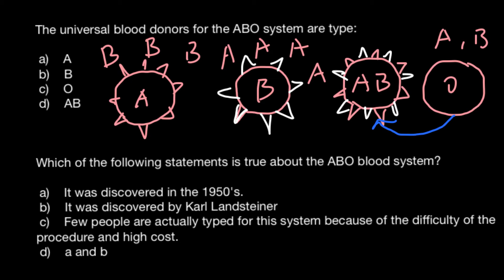According to our picture, blood group O can be transfused to people with blood group AB, since blood group AB doesn't have antibodies A or B present, and the red blood cells of blood group O don't have any antigens. So blood group O can also be transfused to people with blood group B, because blood group O doesn't have antigens A or B, and the antibodies A present in blood group O wouldn't attack those red blood cells, which lack those antigens.